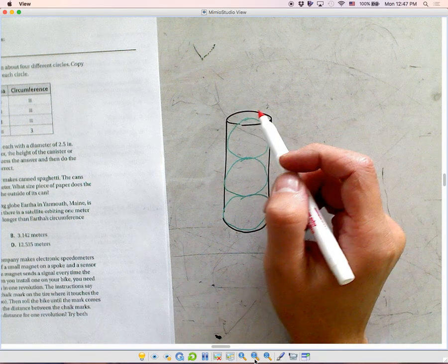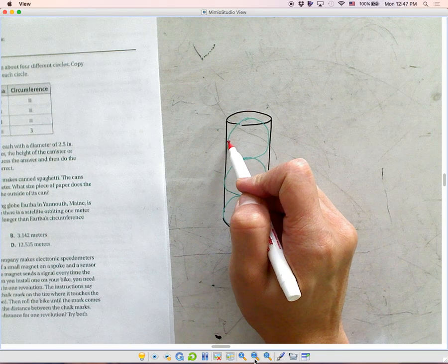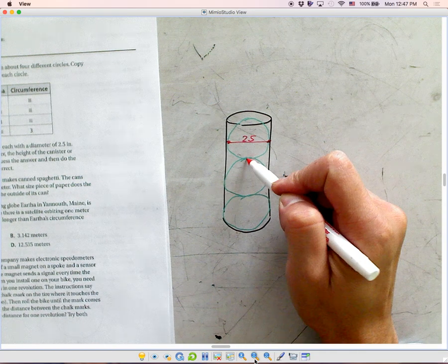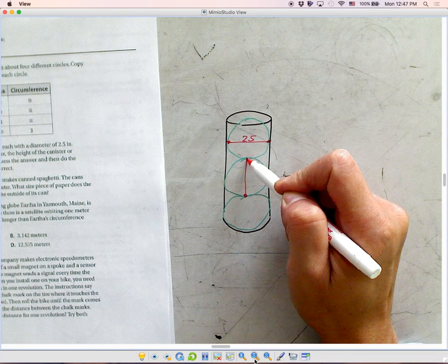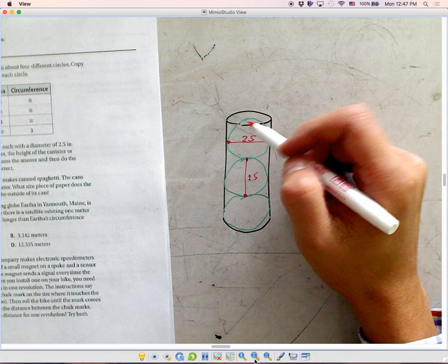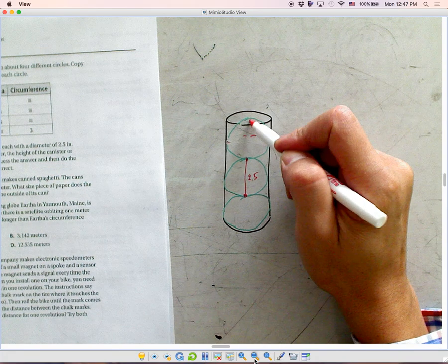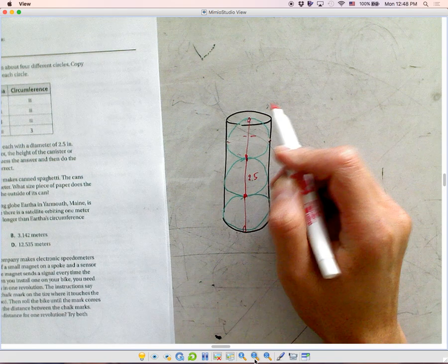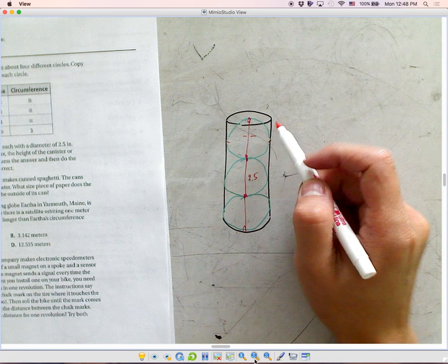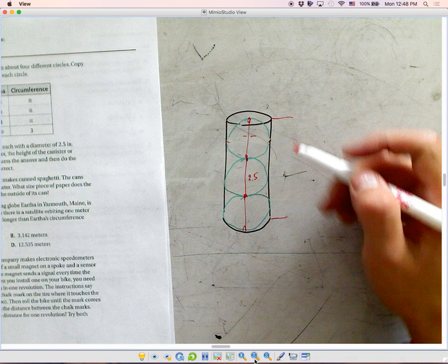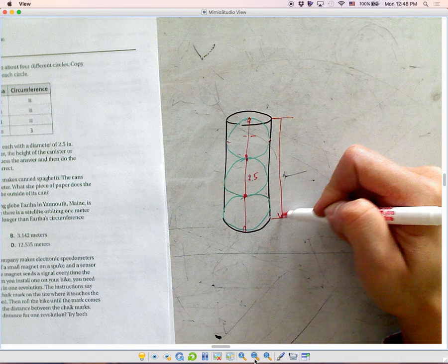Diameter is 2.5. So from here to here is 2.5. Or from here to here is 2.5. So you can see that actually if you draw it this way, you would know that's the three diameters of the tennis balls. If you add them up, that's going to be the height of this canister.